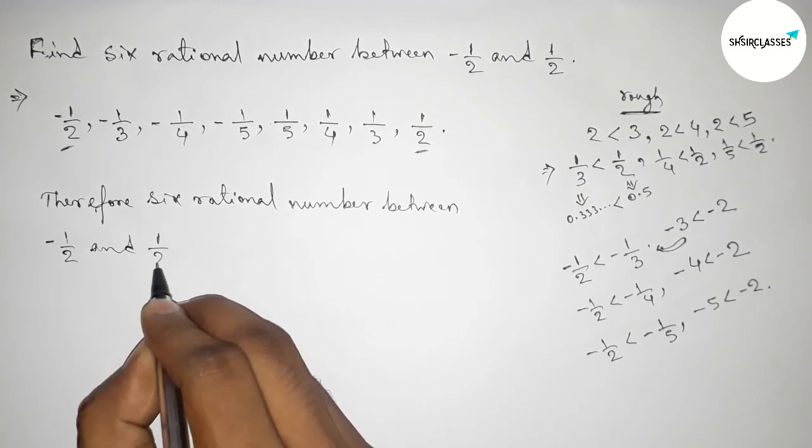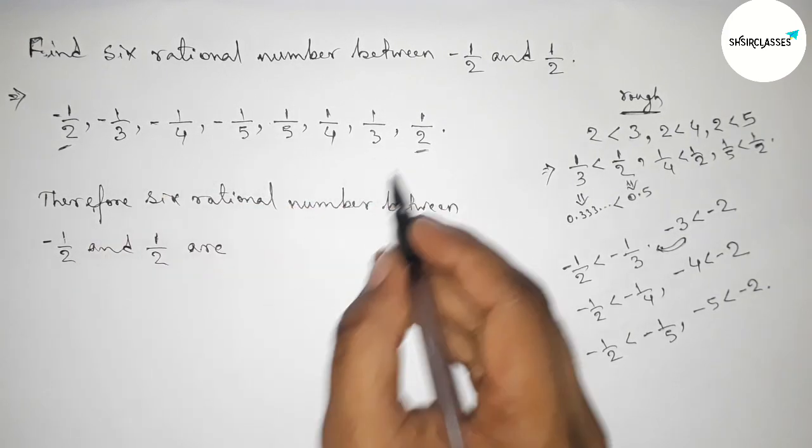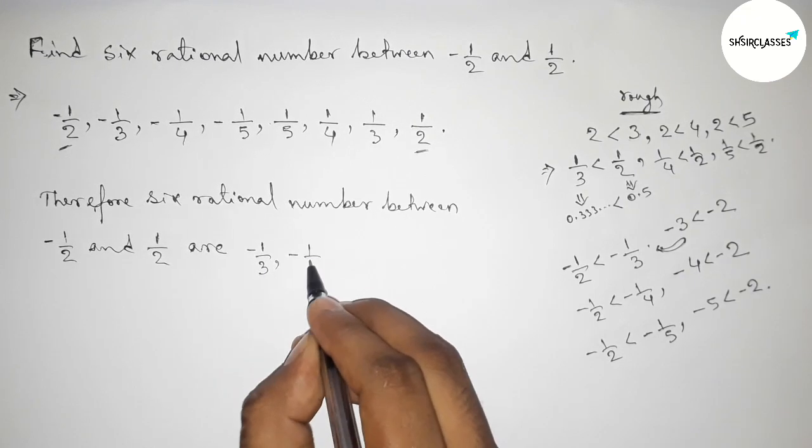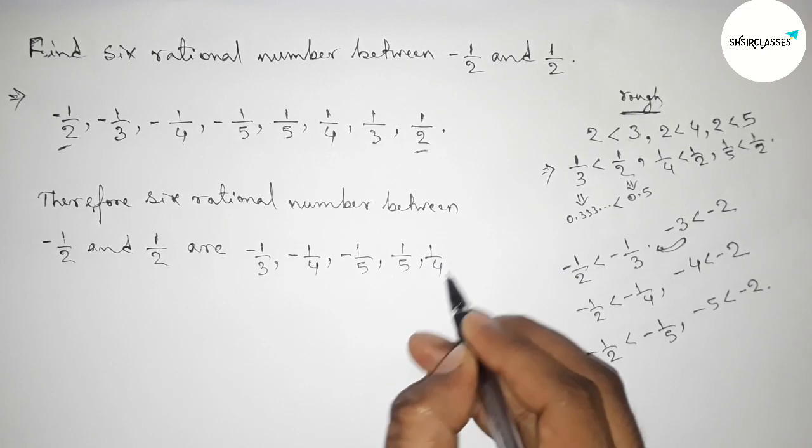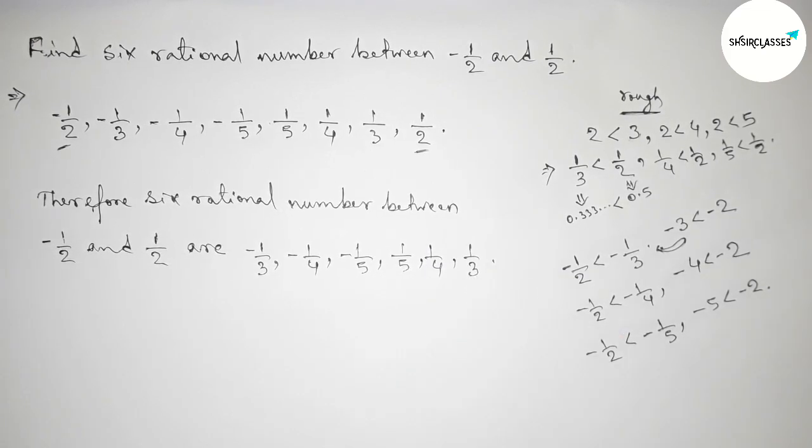The six rational numbers between minus 1 by 2 and 1 by 2 are: minus 1 by 3, minus 1 by 4, minus 1 by 5, 1 by 5, 1 by 4, and 1 by 3. That's all, thanks for watching, please share it.